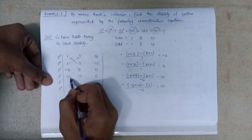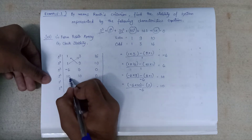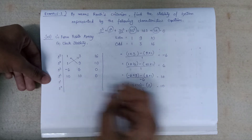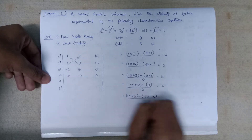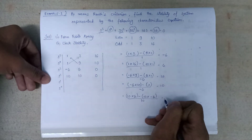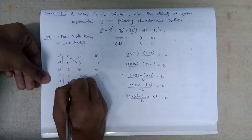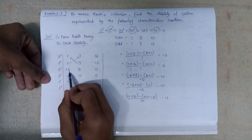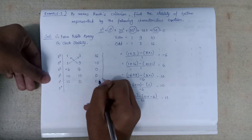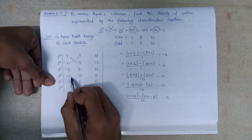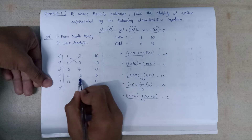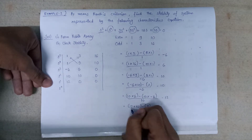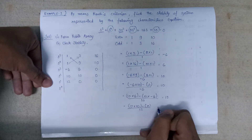After this, taking minus 6 and 10, we compute: 10 multiplied by 6 minus 10 multiplied by minus 6, the whole divided by 10, gives 12. Then 10 multiplied by 0 minus 0 multiplied by minus 6, giving 0. So we write 12 and 0 in this row.